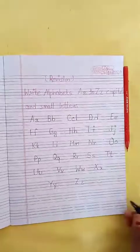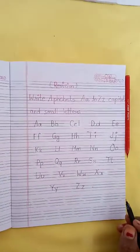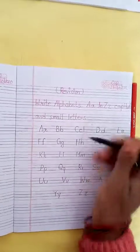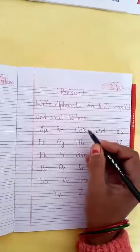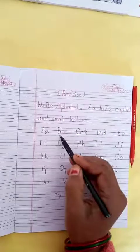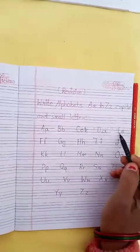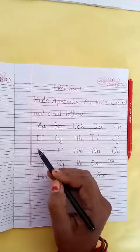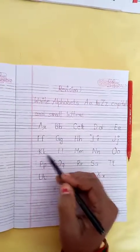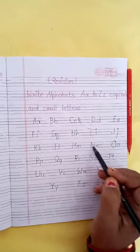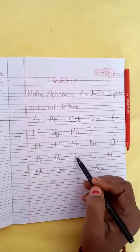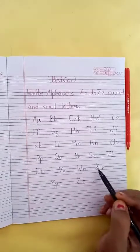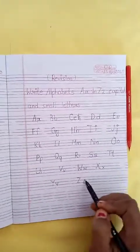Let's read through these once. A, B, C, D, E, F, G, H, I, J, K, L, M, N, O, P, Q, R, S, T, U, V, W, X, Y, and Z. Okay?